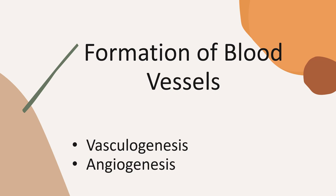Other structures derived from the mesoderm include blood and blood vessels. Blood vessels can form in two ways: vasculogenesis, whereby vessels arise from blood islands, and angiogenesis, whereby blood vessels arise from pre-existing vasculature. Blood islands appear in the mesoderm surrounding the wall of the yolk sac sometime at the third week of development, and slightly later in the lateral plate mesoderm and other regions. These blood islands arise from mesodermal cells that are induced to form hemangioblasts, which are the precursors of both the blood vessels and the blood cells.